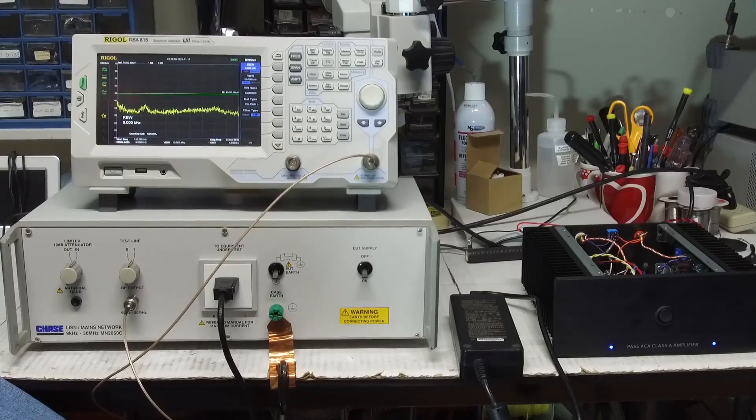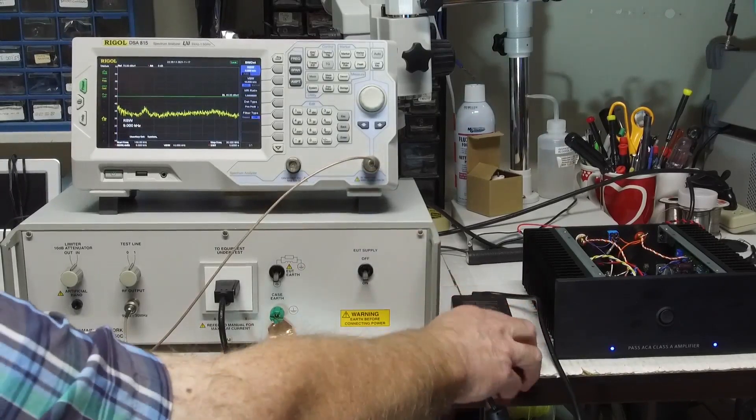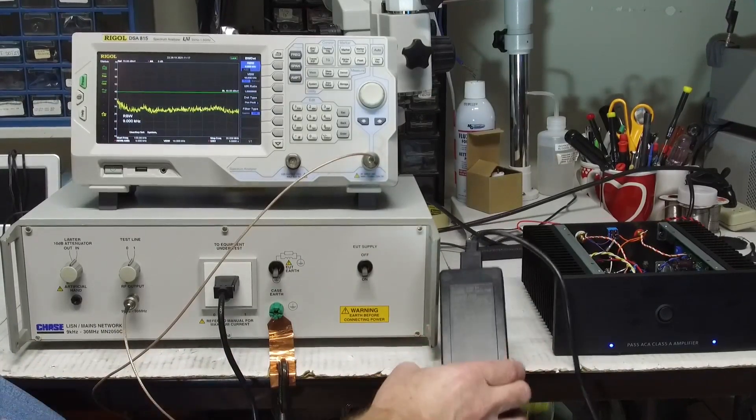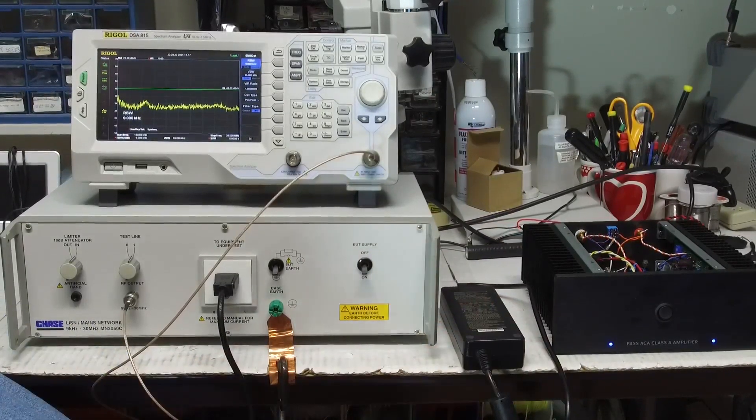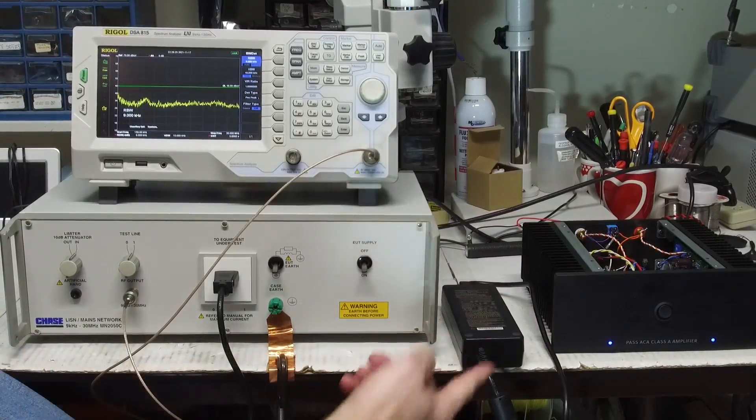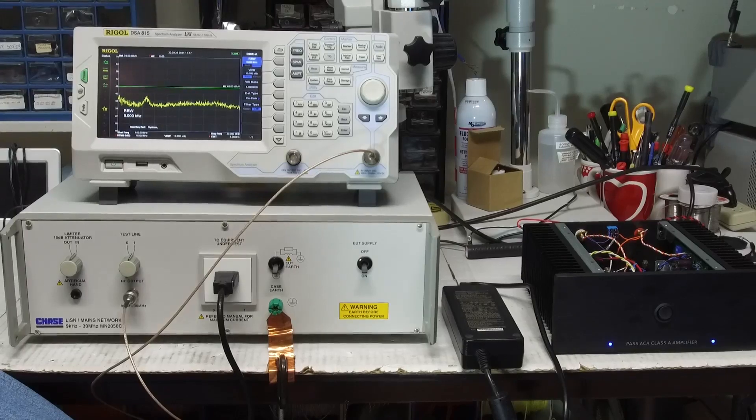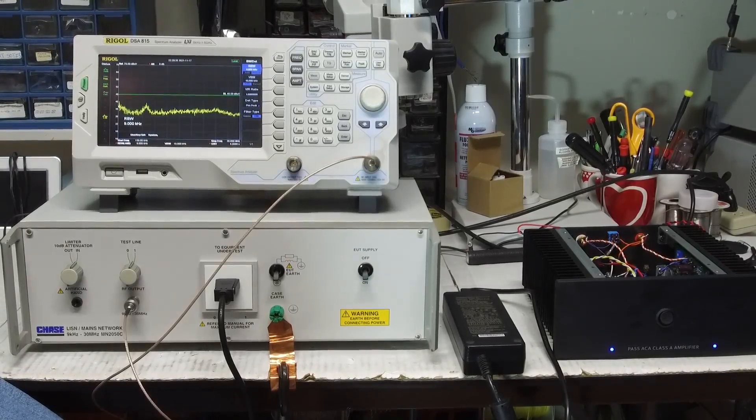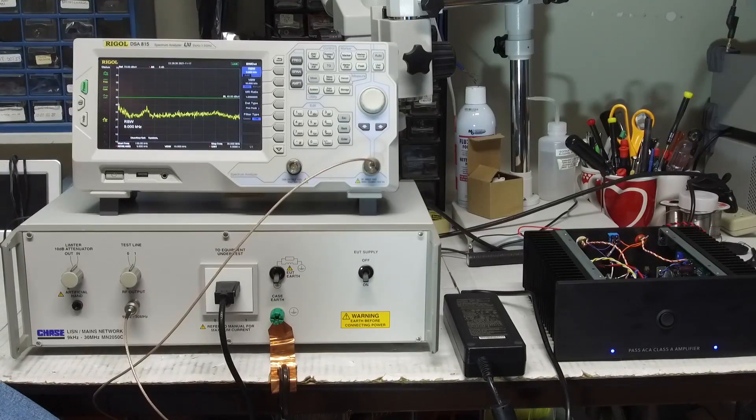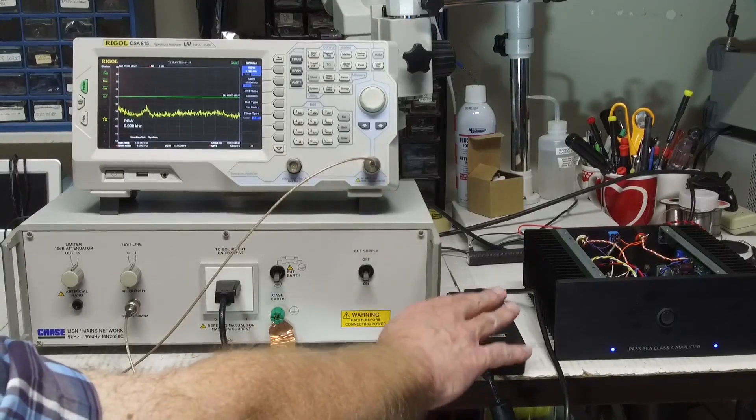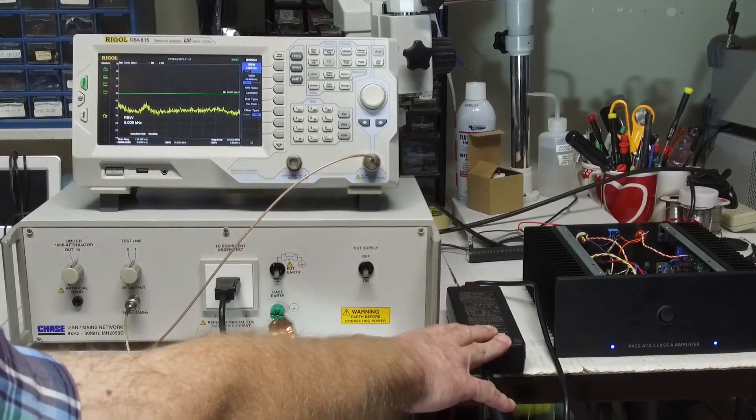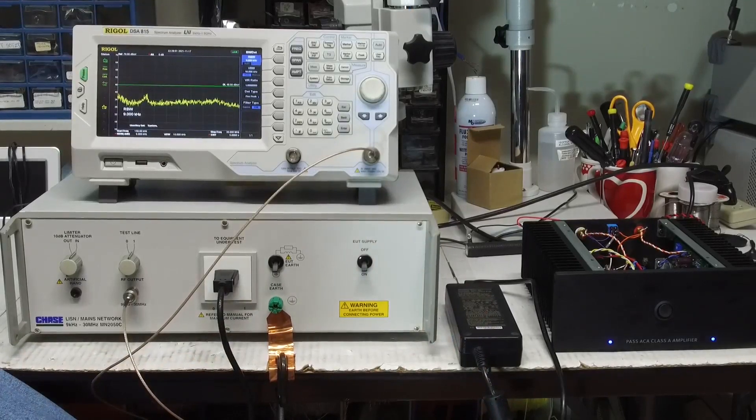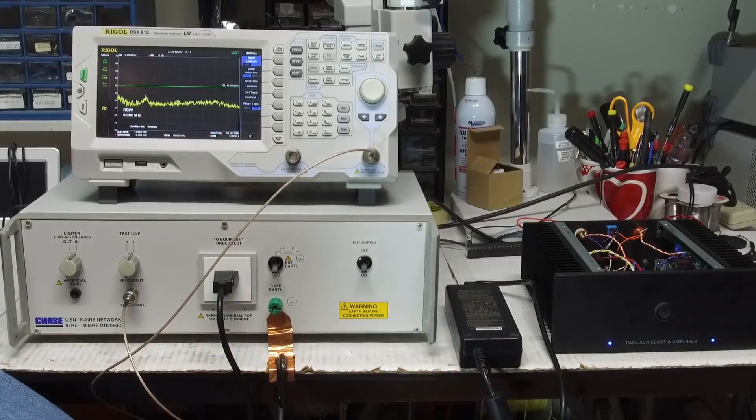We are looking at the line conducted emissions of the Meanwell AC to DC 120 watt switcher. This is how much noise that the power supply kicks back down on the AC mains. There are limits that are specified by the FCC and the European Union and this is a very critical measurement or very critical specification to meet. I mentioned earlier that I've had some problems with Meanwell power supplies actually meeting this specification. However, this power supply looks very good.